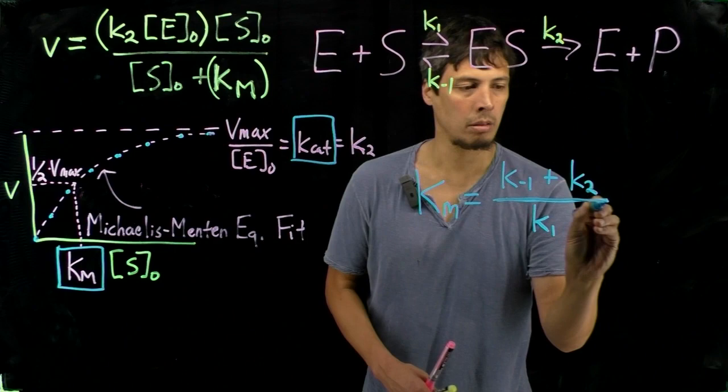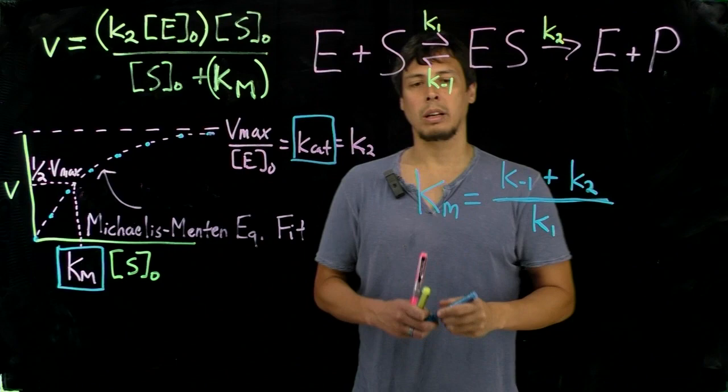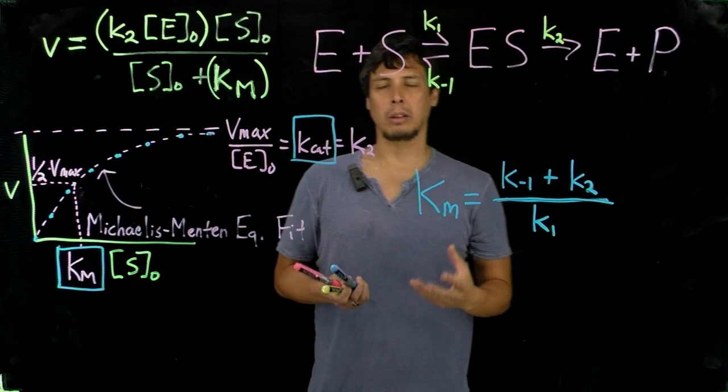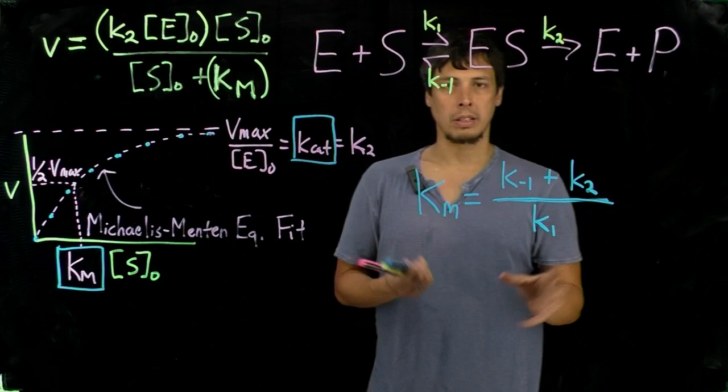And so this takes the form, then, of a dissociation constant. So, again, in the analogy that we're looking at between this hyperbolic equation and the hyperbolic equation for O2 binding to myoglobin, you can think of this kind of as Kd.